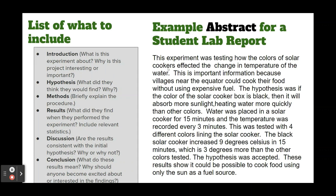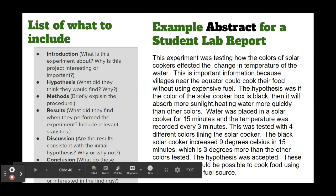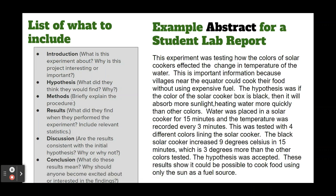A solar cooker is basically a cardboard box that's been modified to collect energy from the sun and raise the temperature of something. The hypothesis was: 'If the color of the solar cooker is black, then it will absorb more sunlight, heating water more quickly than other colors.' Next comes methods: 'Water was placed in a solar cooker for 15 minutes and the temperature was recorded every three minutes. This was tested with four different colors lining the solar cooker.' So that's the procedure summarized.